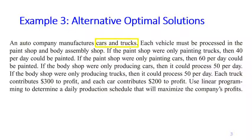A company manufactures cars and trucks. Both products need to be painted in a paint shop and assembled in a body assembly shop. The problem states how much time a car and truck spend in each shop, the contribution to profit from each truck and car, and the objective is to maximize the company's profit. Please pause the video to read this problem carefully.